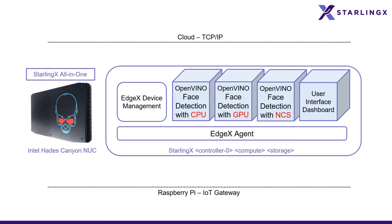In this demo, we show three cases where OpenVINO uses CPU, GPU, and Movidius Neural Compute Stack for face detection and edge analysis. Now, let's see the demo.